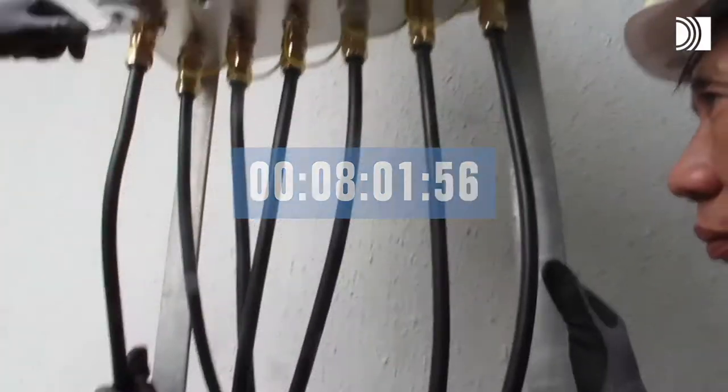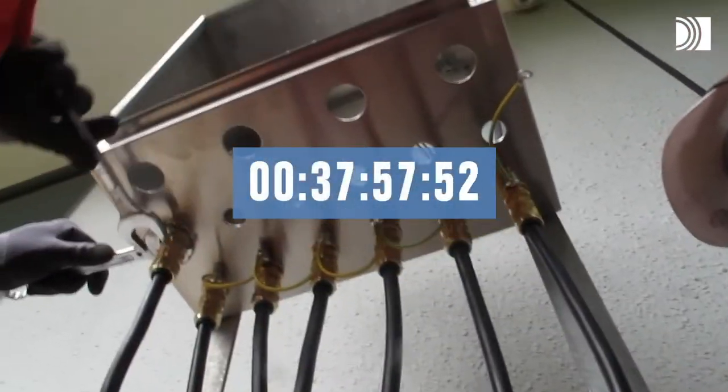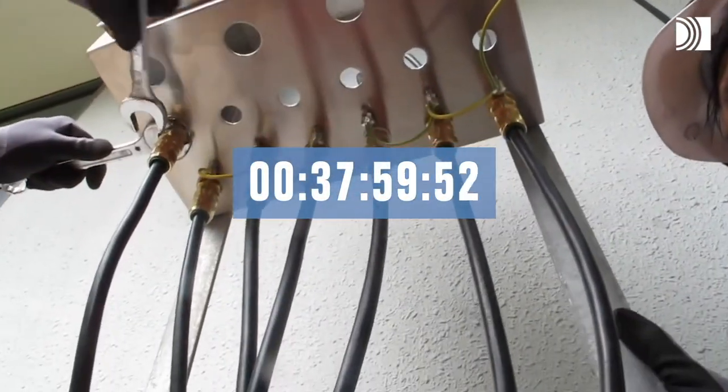The first cable gland takes eight minutes to install, and the first row of six glands is ready after 38 minutes.